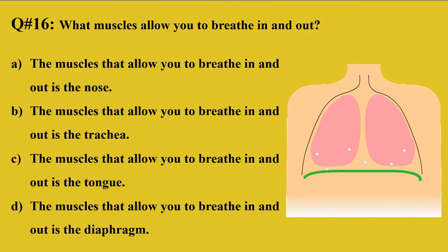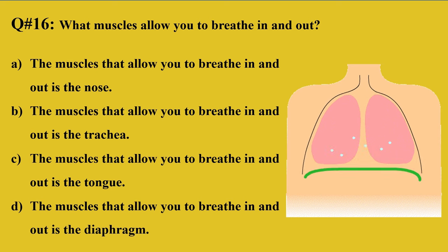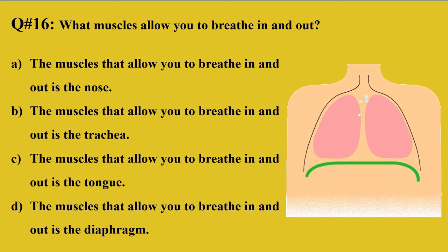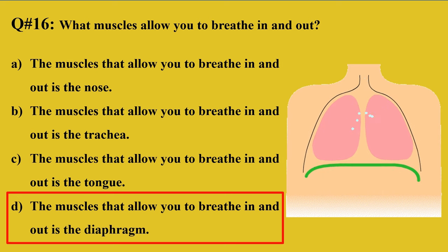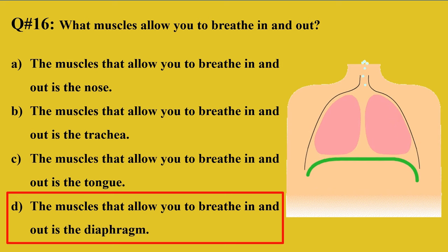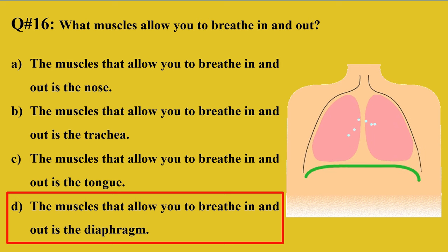Question 16: Which muscles allow you to breathe in and out? A: Nose, B: Trachea, C: Tongue, D: Diaphragm. The right option is D — the diaphragm are the muscles that allow you to breathe in and out. When you breathe in, the diaphragm contracts and moves downward. When you exhale, the diaphragm relaxes and moves upward.